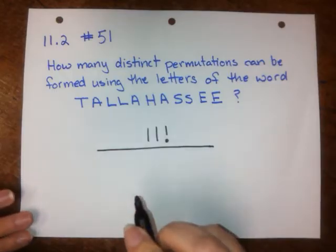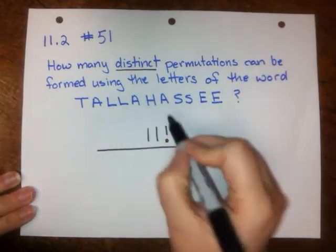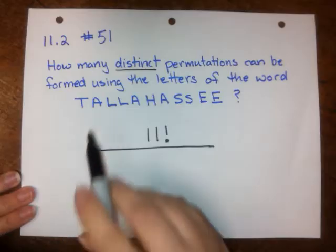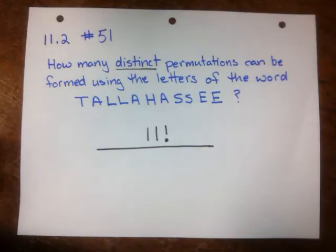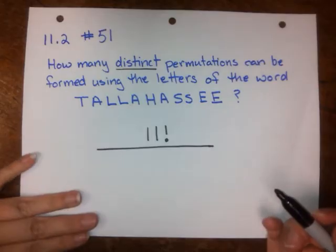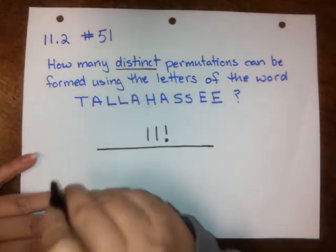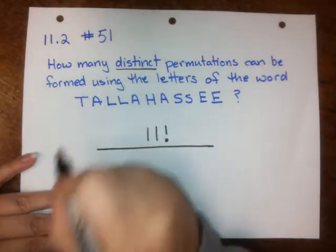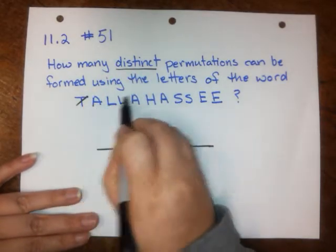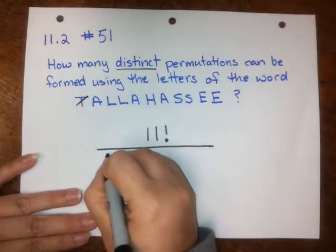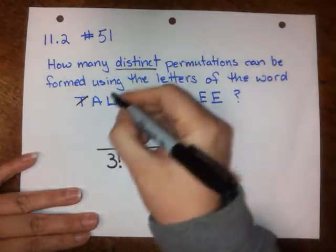For the bottom of the fraction, the question is asking for distinct permutations. That means the double letters and triple letters in here are going to cause a problem because they won't make distinct permutations. So we need to go through and find any letter that shows up more than once in the word. T only shows up once, so I don't have to worry about that. A — I have 3 A's, so I'm going to put a 3 factorial in my denominator to account for those 3 A's.